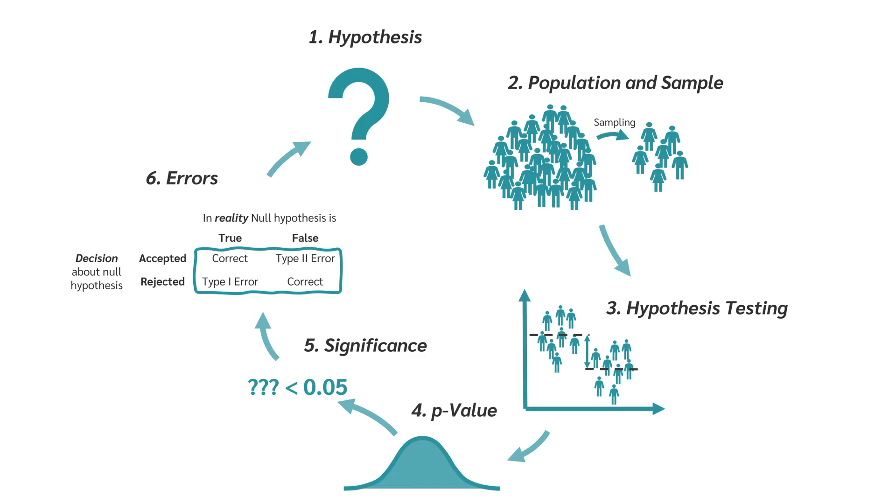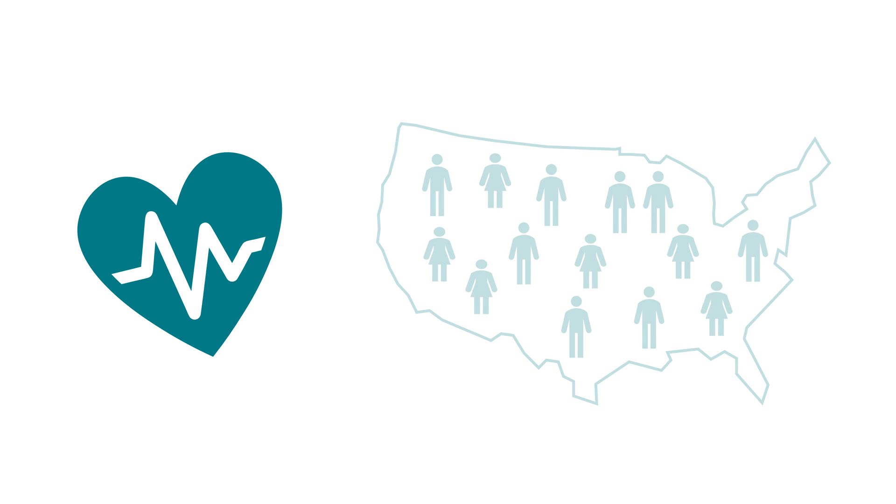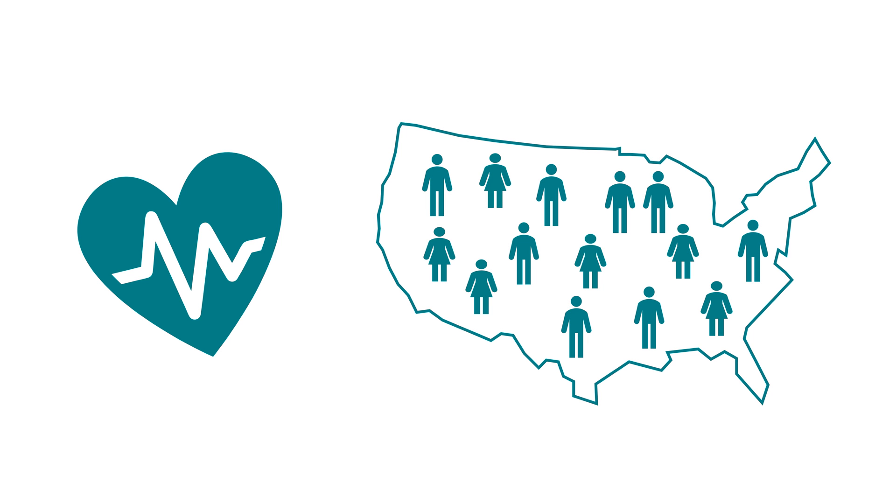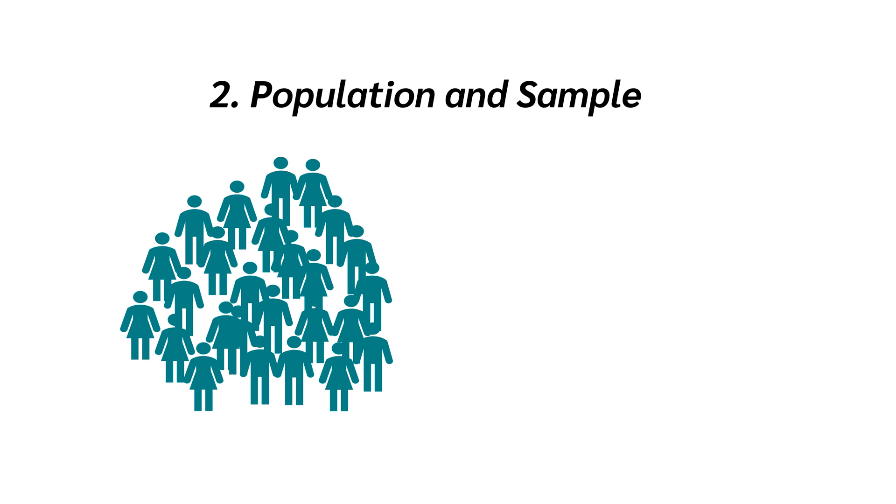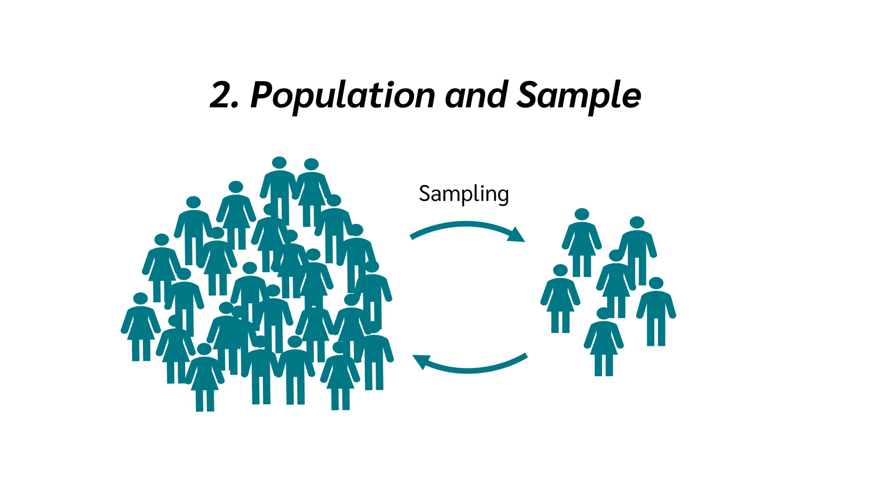But what's next? In our hypothesis, we stated that we would like to study people with high blood pressure. So our population is all people with high blood pressure in, for example, the US. Obviously, we cannot collect data from the whole population. So we take a sample from the population. Now we use this sample to make a statement about the population.